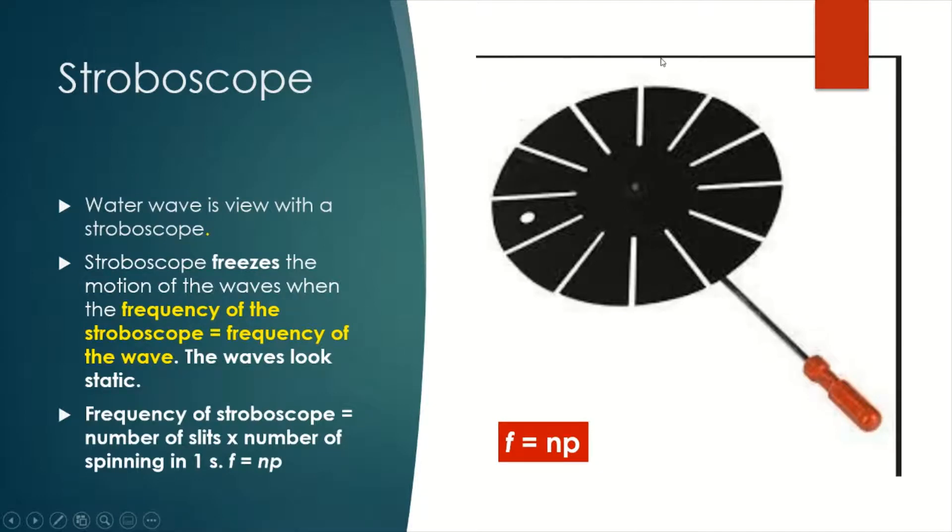For example, a water wave that is moving forward. What we see through this hole depends on the frequency of the stroboscope. If the frequency of the stroboscope is the same as the frequency of the water wave, the water will look static, that means not moving. This is when the frequency of the stroboscope equals the frequency of the water wave.